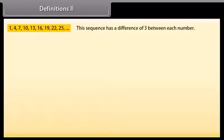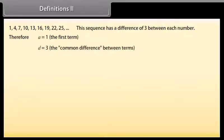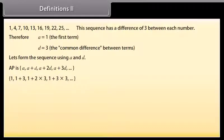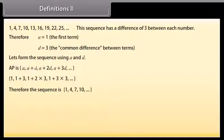Look at this example. We can see that this sequence has a difference of three between each number. Therefore, a is equal to 1 (the first term) and d is equal to 3 (the common difference). Substituting the values of a and d into the AP formula, we get: 1, 1+3, 1+2×3, 1+3×3, and so on, which gives the sequence 1, 4, 7, 10, and so on.